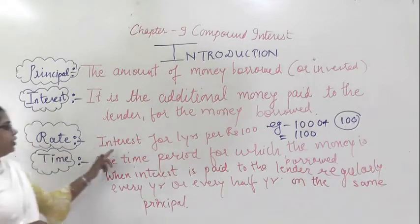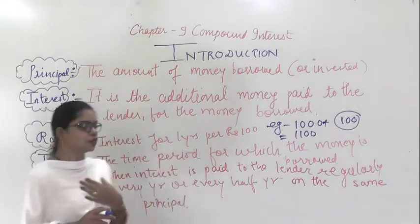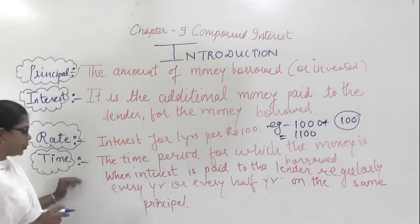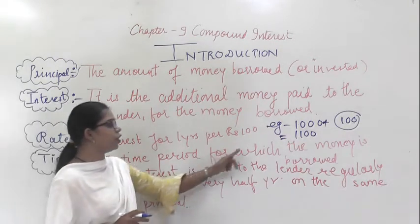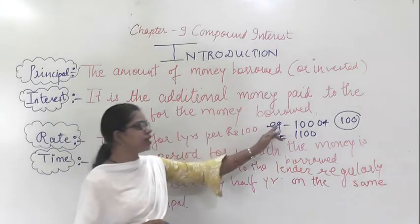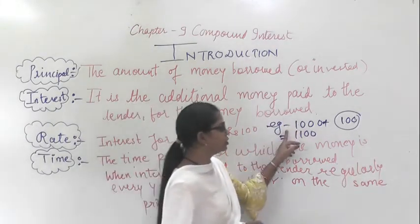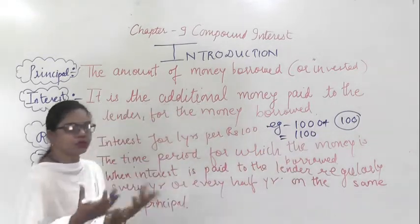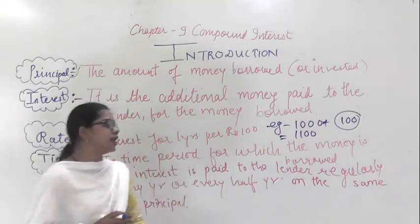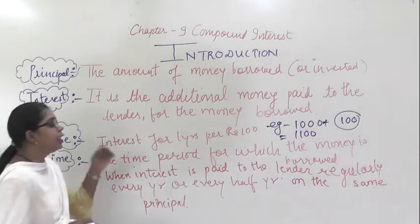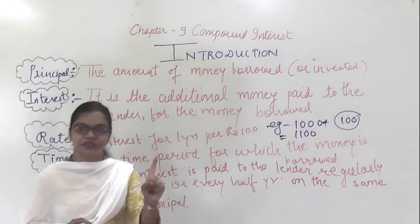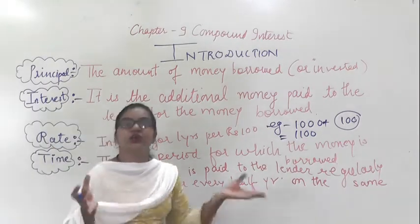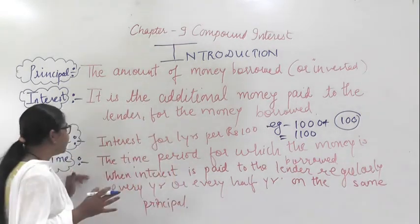The Rate is the interest for one year per hundred rupees. Time is the time period for which the money is borrowed — for example, one week (seven days), one year, half year, two years, three years, or ten years. That is the time period.